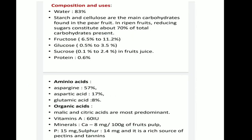Composition and Uses. In Pyrus, water content is 83%; starch and cellulose are the main carbohydrates found in the pear fruit. In ripened fruits, reducing sugars constitute about 70% of total carbohydrates present — fructose 6.5% to 11.2%, glucose 0.5% to 3.5%, sucrose 0.1% to 2.4%. In fruit juice, protein is 0.6%. Amino acids include asparagine 57%, aspartic acid 17%, and glutamic acid 8%.